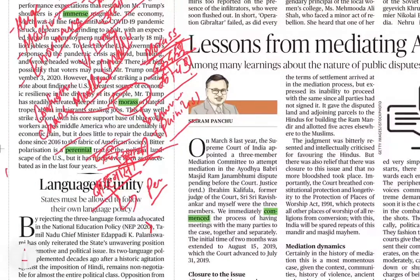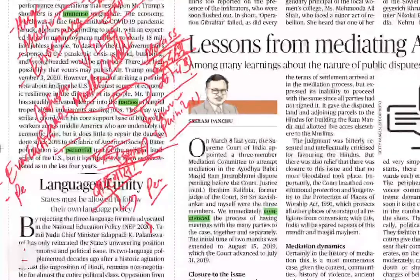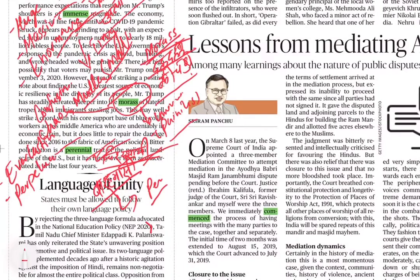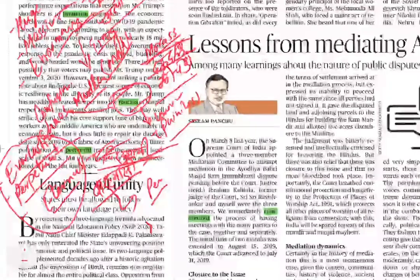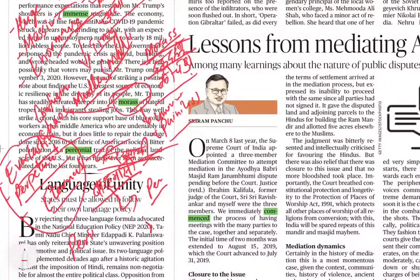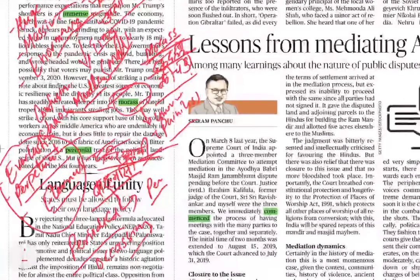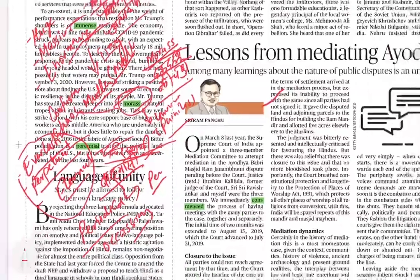Similar words for perennial in English: everlasting, perpetual, and eternal. Opposite words: periodic, periodical, और occasional.